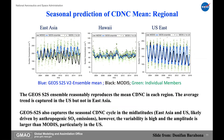Cloud drop number concentration also seasonally — this is the mean. We argue here that it reasonably reproduces the mean cloud drop number concentration. The trend we're getting in the US, but the East Asia trend we're not getting, so it's a little bit more complex over there.